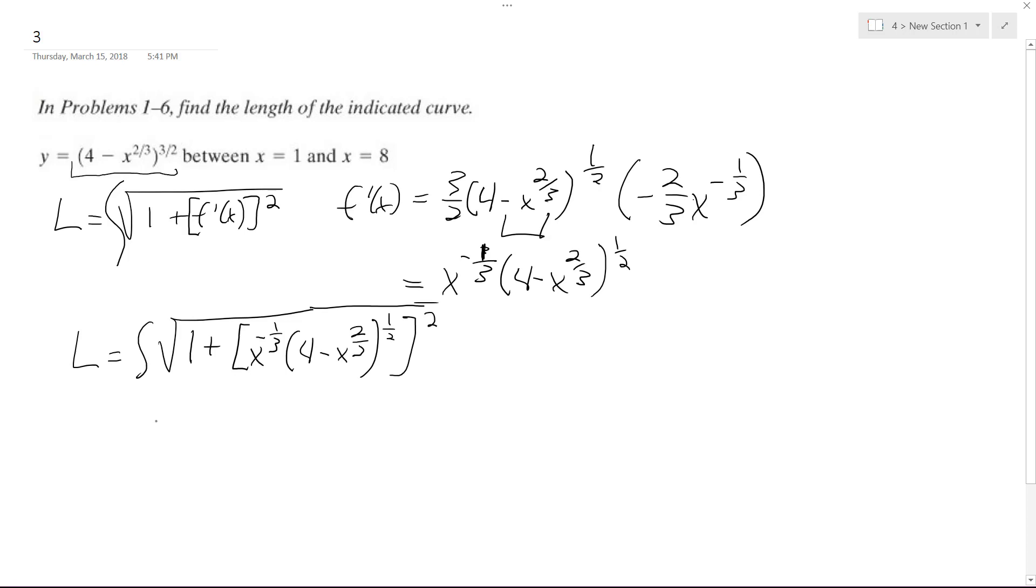So before I integrate anything, I can do this. 1 plus, and I can break this apart, so we square that, and then we square this. What we end up with is x raised to the negative 2 thirds, and then times quantity 4 minus x raised to the 2 thirds. I can still distribute this negative x raised to the 2 thirds.